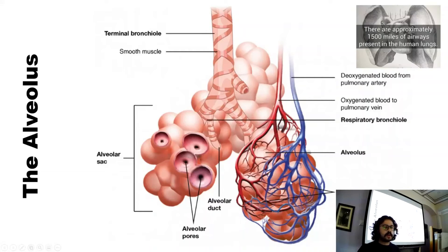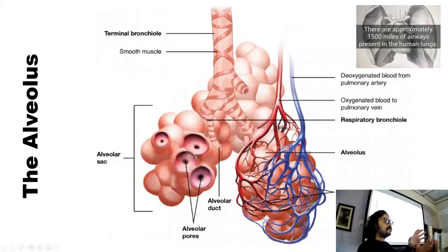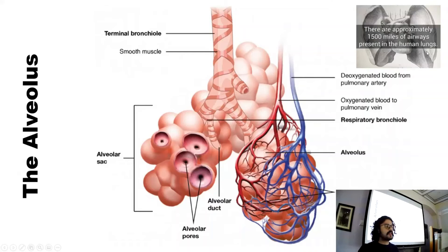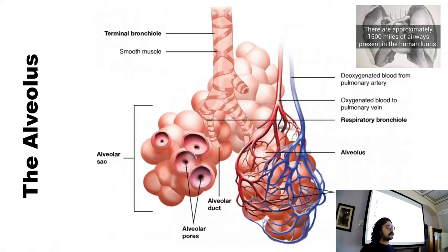The reason why we have capillaries is because they're one cell thick. There's not a big distance for gas to move from the capillary into the alveoli. One interesting point: there are 1,500 miles of airways present in the human lungs — just picture how much we've got tightly packed in our lungs.